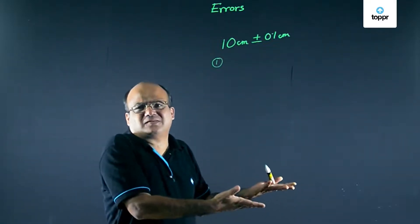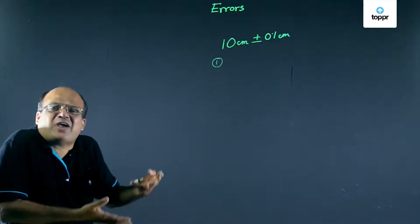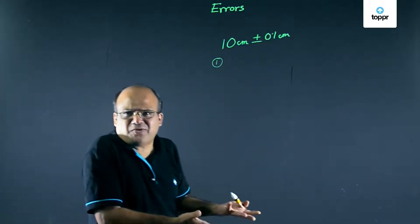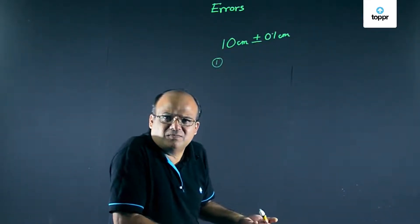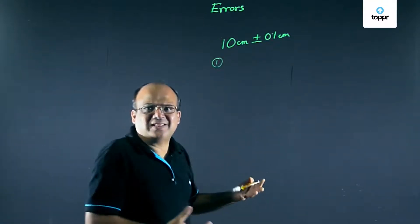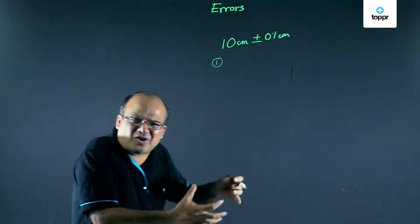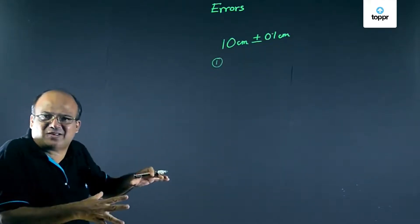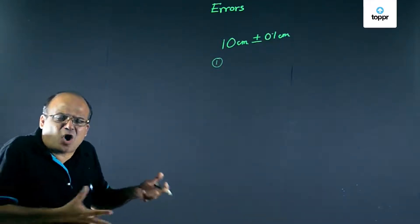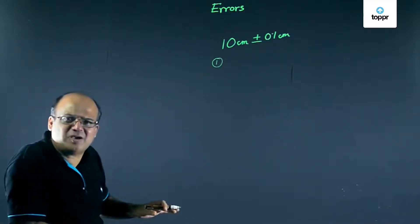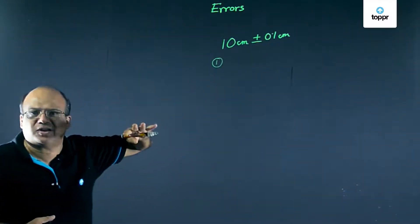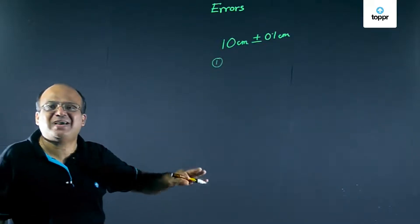The second kind of errors are random errors. For example, you measure your height at five different places and get different readings — the readings should have been the same, but they are different and we don't know why. Similarly, if you measure the time period of a simple pendulum ten times, you get ten different readings. These are random errors, caused by the constraints of human beings. To minimize random errors, we take a number of readings and then find the mean value of those readings.